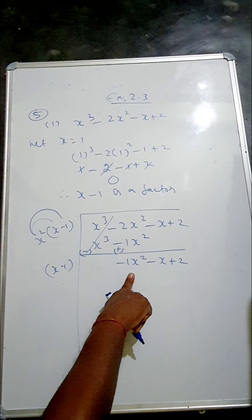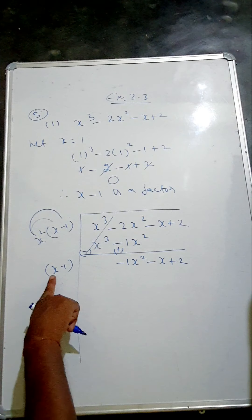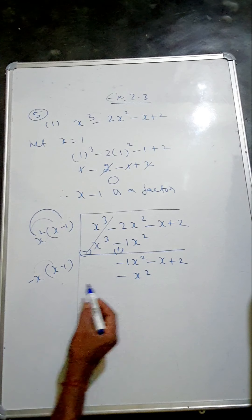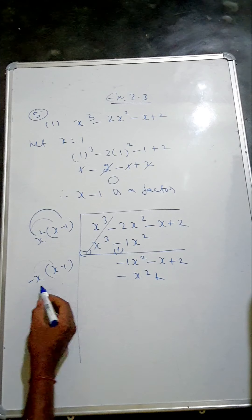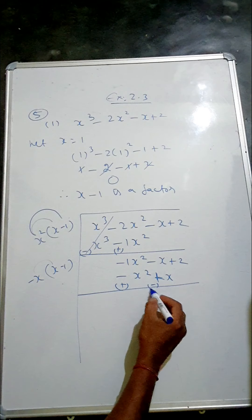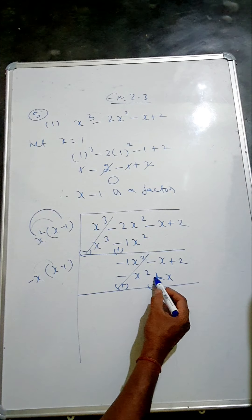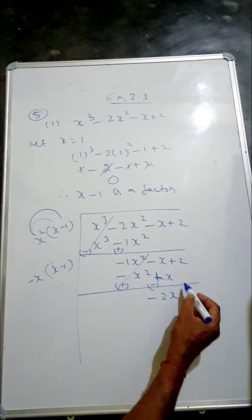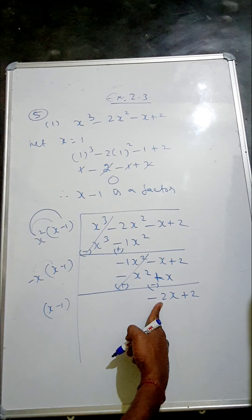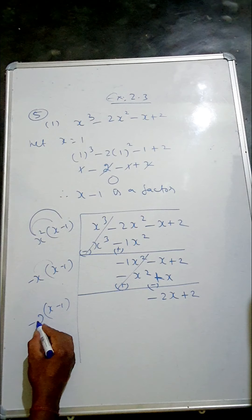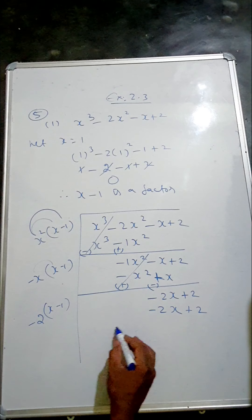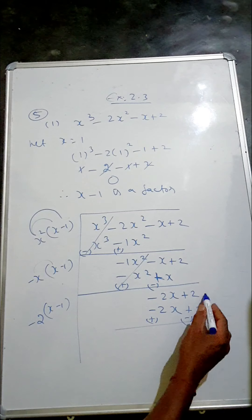Now we need to get minus x squared. We write minus x here. Minus x into x gives minus x squared, and minus x into minus 1 is plus x. We change the sign again: minus becomes plus, plus becomes minus, and these cancel. Minus x and minus x give minus 2x plus 2. Now we write x minus 1 again. We need to get minus 2, so we write minus 2. Minus 2 into x is minus 2x, and minus 2 into minus 1 is plus 2. Change the sign; the 2 cancels and the remainder is 0.